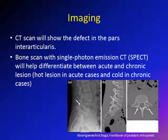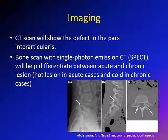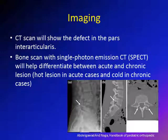In summary for imaging: plain x-ray can show the defect in the lateral view; it is more obvious in the oblique view. CT scan shows the defect in better detail and identifies whether edges are sclerotic, indicating chronicity. A bone scan with SPECT — single photon emission computerized tomography — helps differentiate acute from chronic lesions. Acute lesions appear as hot spots with increased isotope uptake, while chronic lesions are cold with much less uptake.